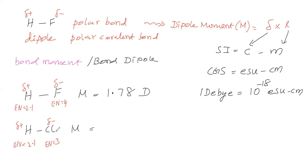Since the electronegativity of F is greater than that of Cl, the magnitude of partial negative charge on F is high and on Cl is low. Correspondingly, the magnitude of partial positive charge on H in HF is greater than in HCl. Looking at bond length: F is small in size, Cl is larger, so HF has a shorter bond length and HCl has a longer bond length.